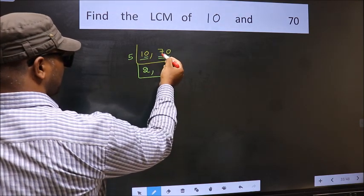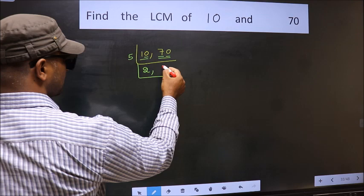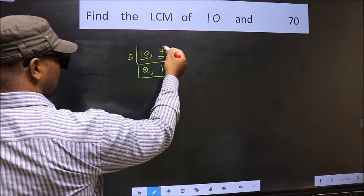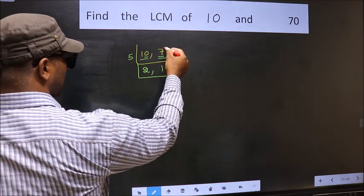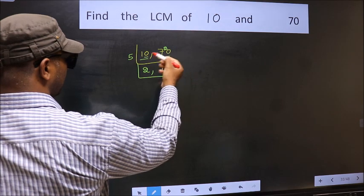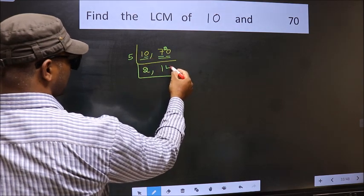First number 7, a number close to 7 in 5 table is 5 once 5. 7 minus 5, 2, 2 carried forward 20. When do we get 20 in 5 table? 5 fours 20.